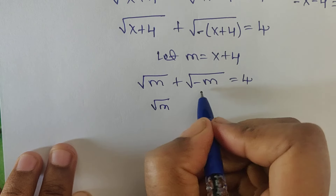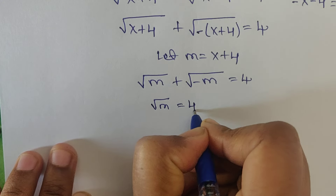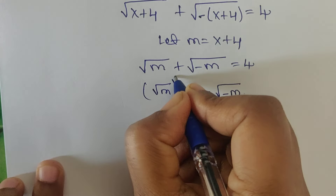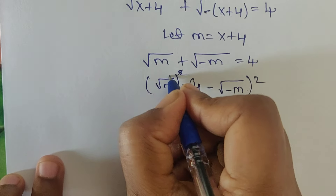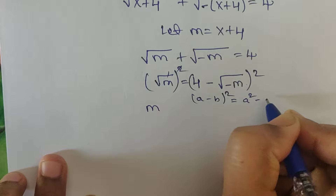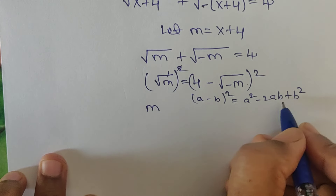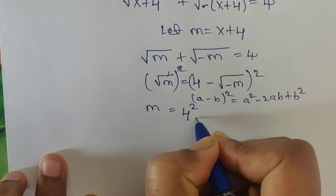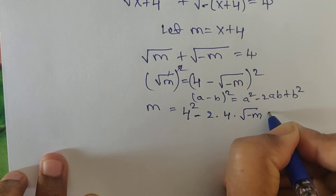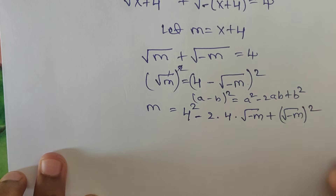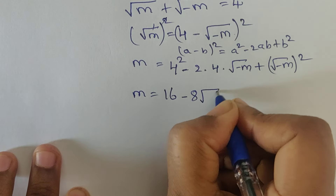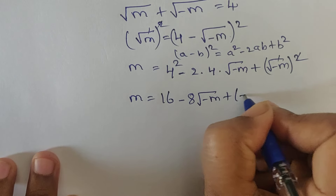Now write the square root of minus m term to the right side, so it becomes square root of m equal to 4 minus square root of minus m. Now apply squares on both sides. The left side gives m. The right side is in the form of (a minus b) squared, which equals a squared minus 2ab plus b squared, giving us 16 minus 8 times square root of minus m plus minus m.